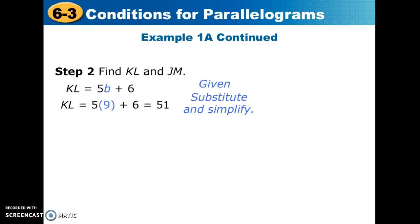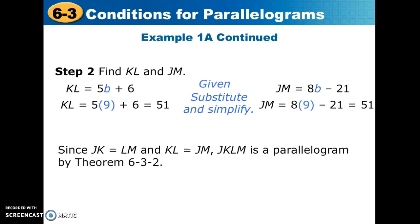Then we do the same thing for b. We plug in the value for b and find the lengths of two more opposite sides. Now we have two pairs of congruent opposite sides. That speaks to theorem 6-3-2, so we can conclude that this quadrilateral is a parallelogram.